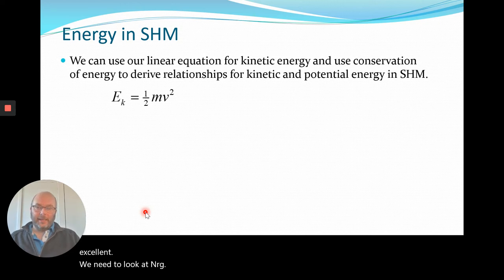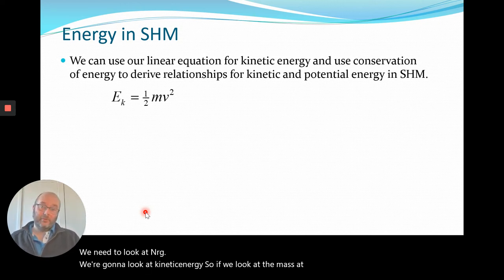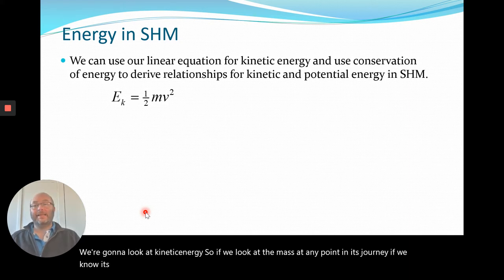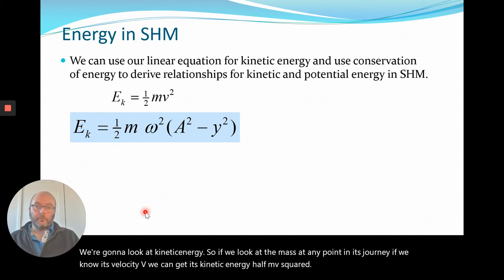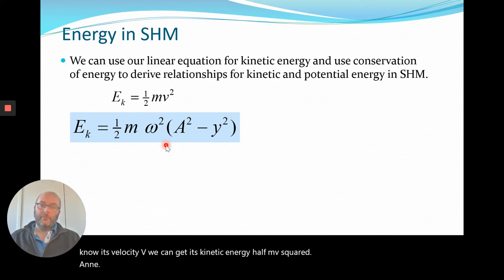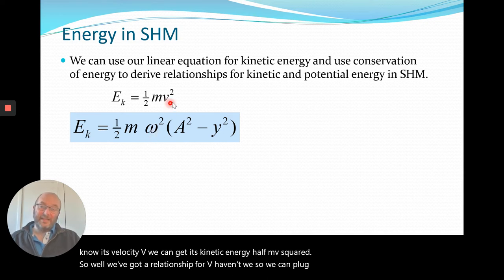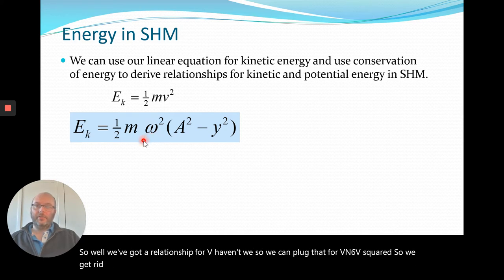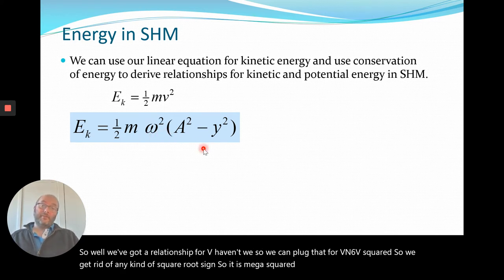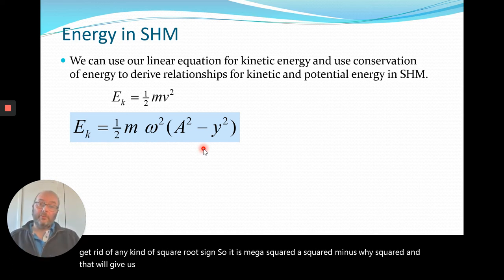We need to look at energy. If we look at the mass at any point in its journey and we know its velocity v, we can get its kinetic energy as ½mv². We've got a relationship for v, so we can substitute it in. Since it's v squared, we get rid of the square root, giving ½mω²(A² - y²) for the kinetic energy at any point in the journey.